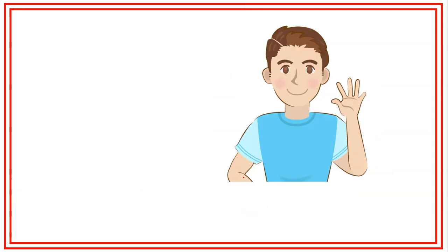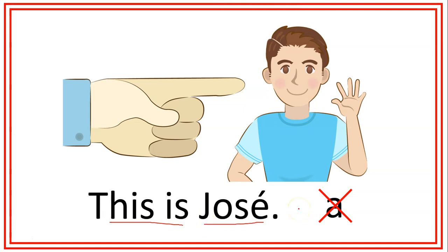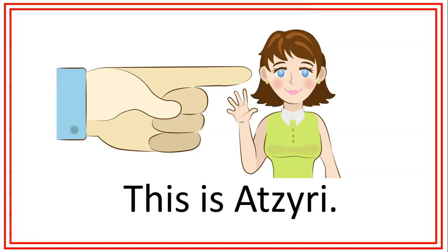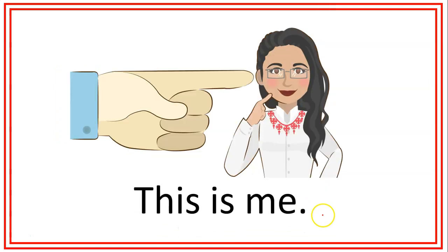We can use this also to identify people. For example, this is José. When we identify people, we don't use the word a or an. We only say this is and the name of the person. Let's see more examples: this is a city, and this is me. We can use this expression when we are looking at some pictures or when we are looking at the mirror.